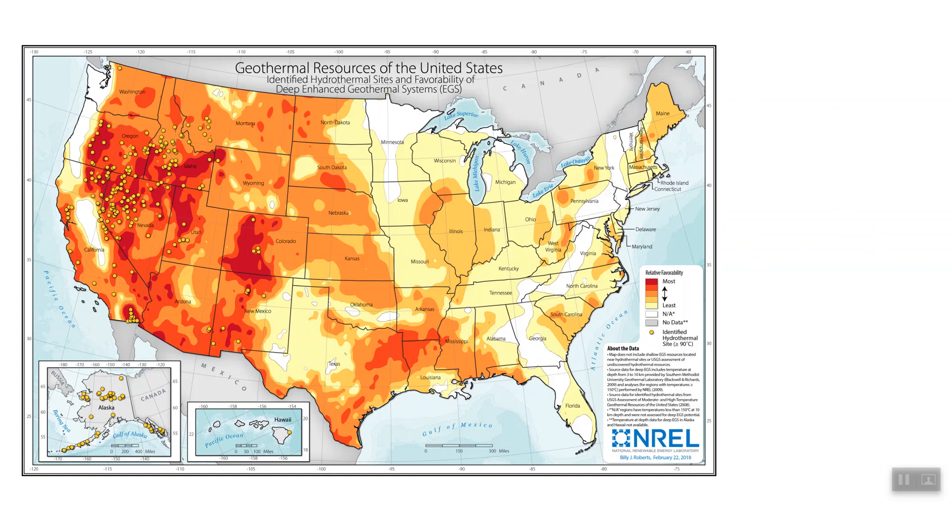Here is a map of the United States and some of the anticipated abilities to deploy geothermal electric generating plants. We also show as yellow circles, those are identified sites greater than 90 degrees Celsius. So those are anything that's low enthalpy or above. And then here's favorability for actual extraction of energy as electricity from these places.